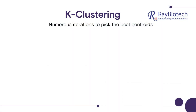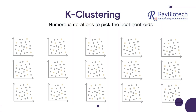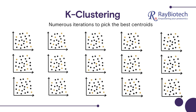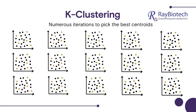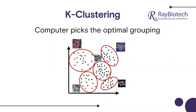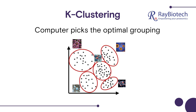Numerous iterations are performed to find the optimal centroid position and grouping. Fourth, the samples are clustered into five final groups, and that is the data we care about.